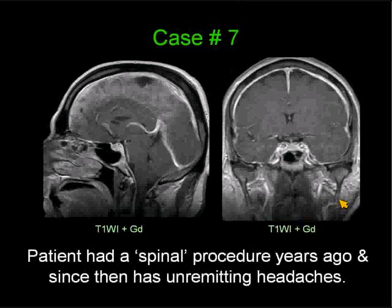Case number seven. This is a patient that had a spinal procedure years ago and since then has had unremitting headaches. Two post-gadolinium T1-weighted images: to your left a mid-sagittal one, and to your right a coronal image.